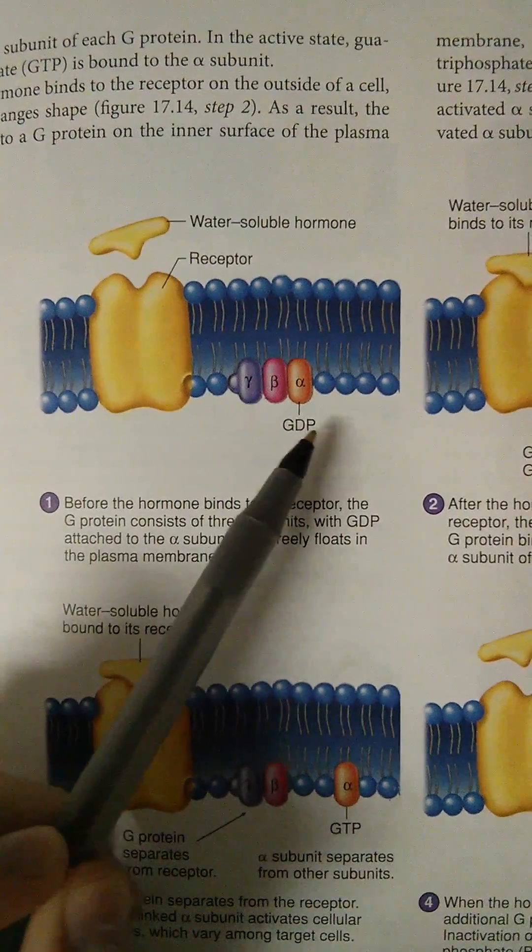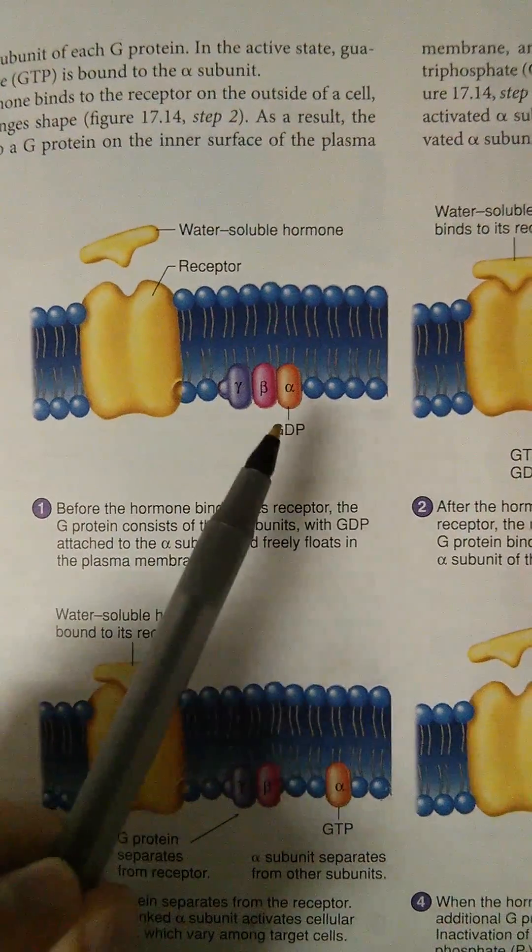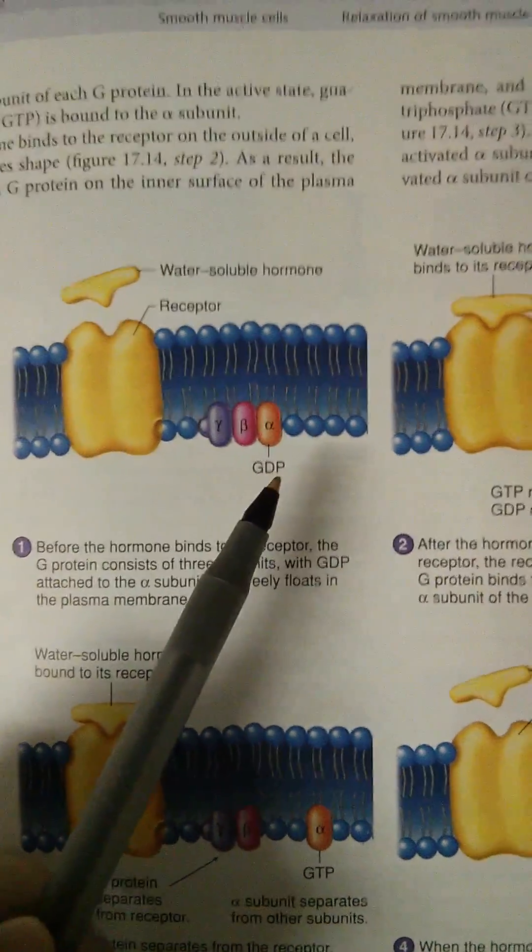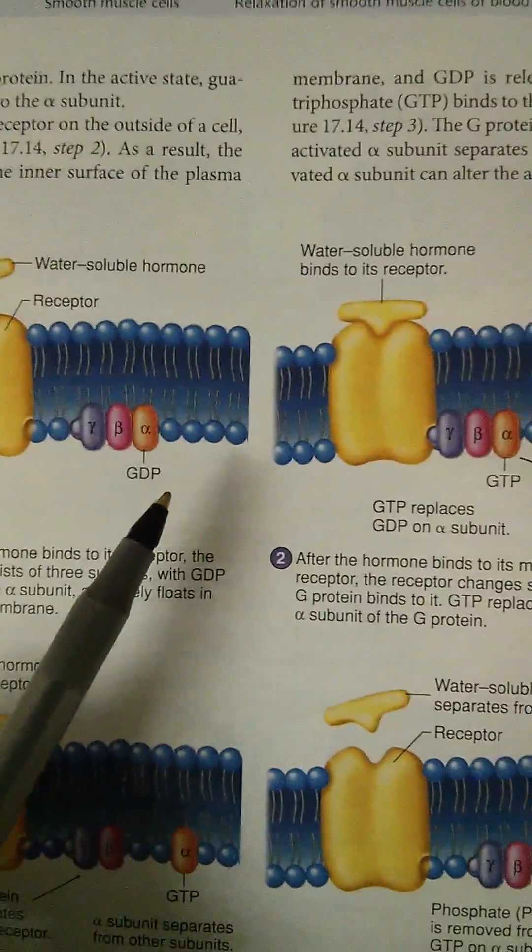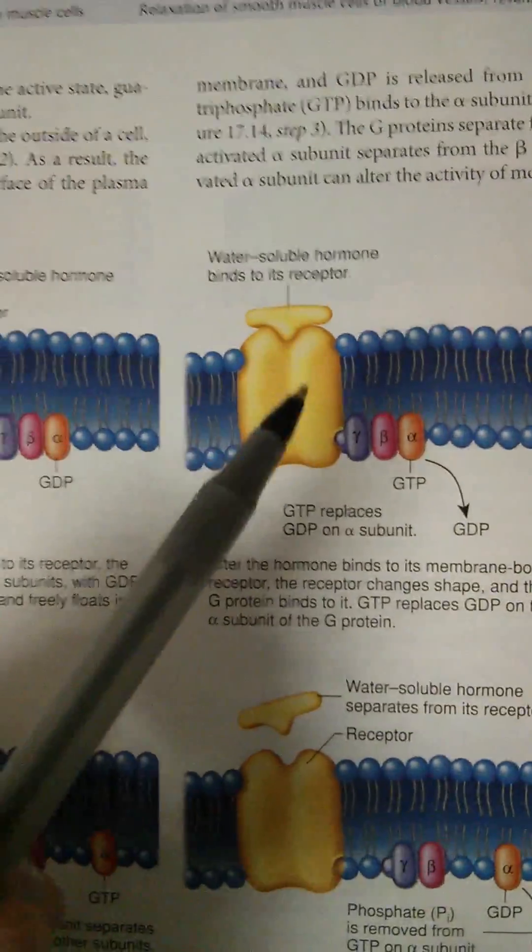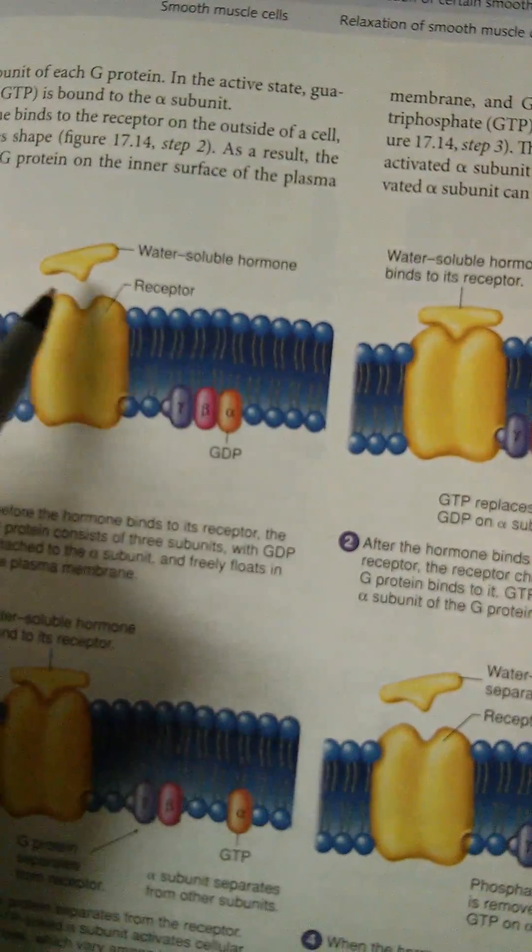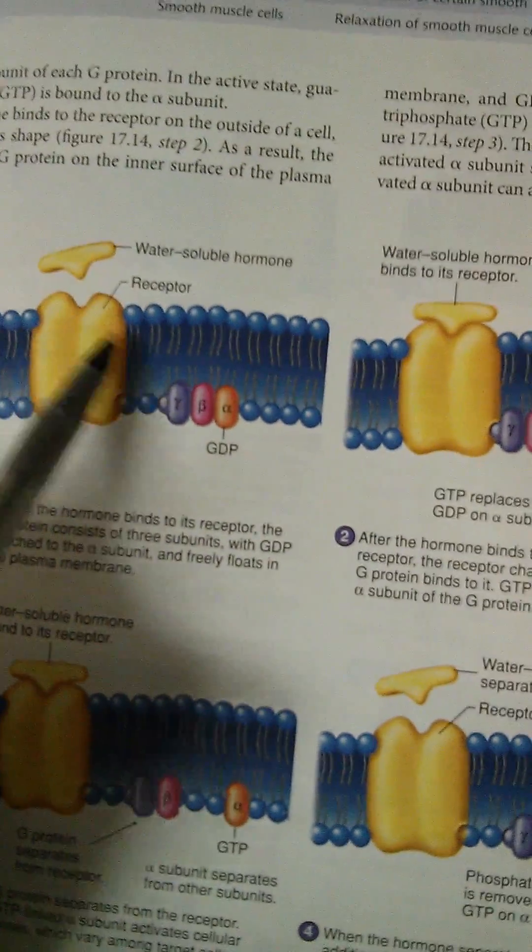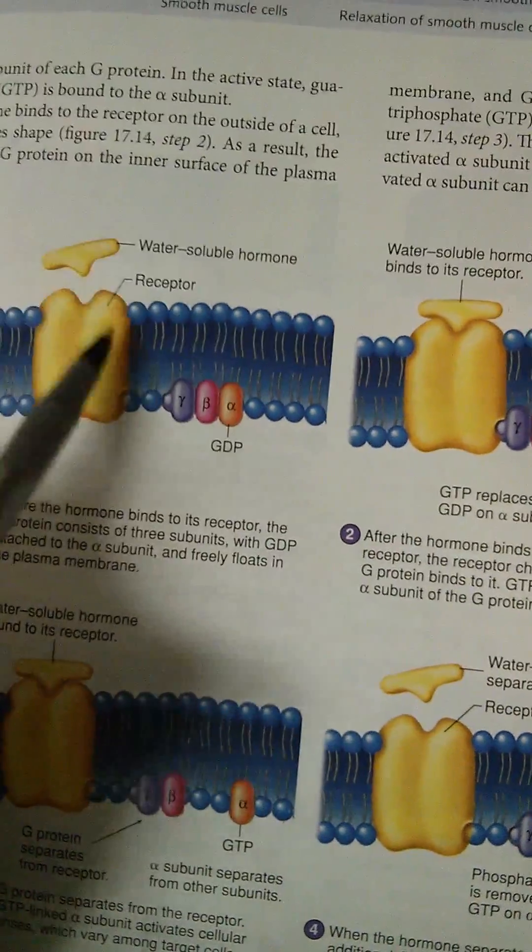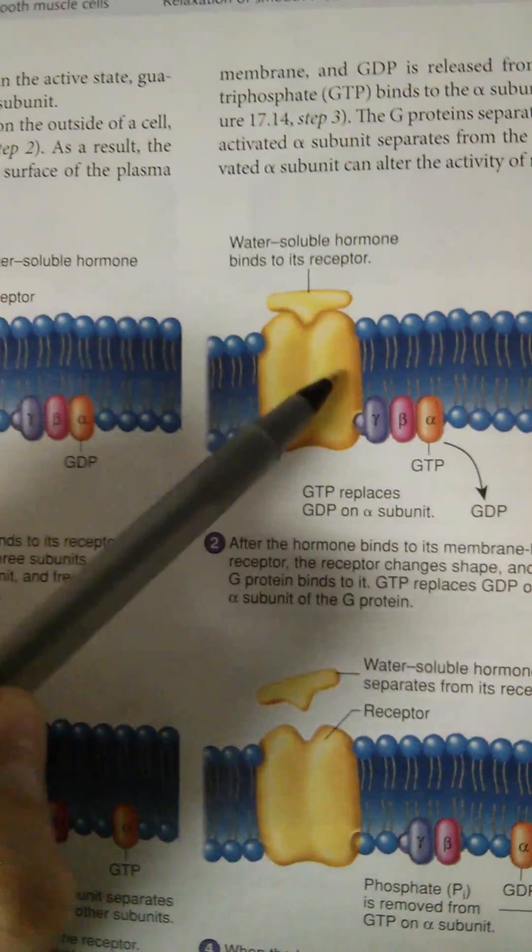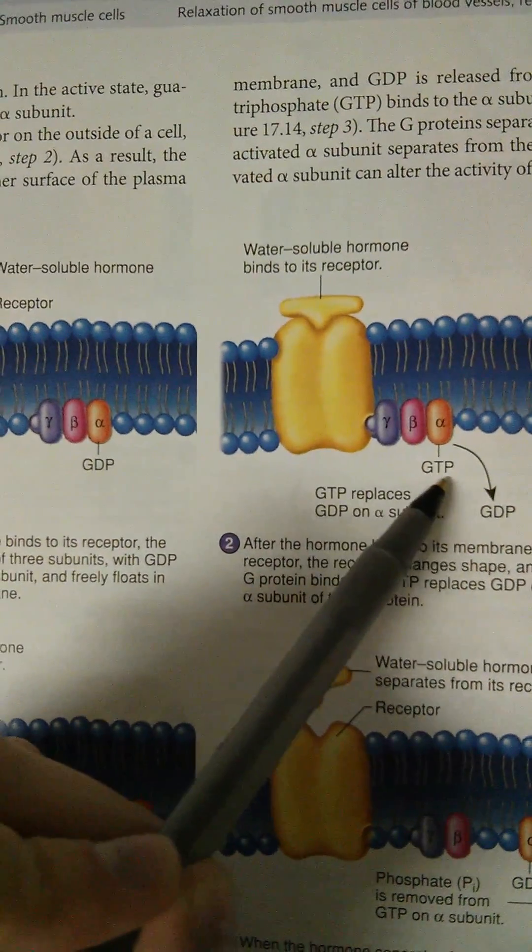it has something here called GDP. Don't worry too much about that. It's not super important. But what's important to know is that when it's actually activated, well, this is before it's, I'm sorry, this is before it's activated because it was before it actually bound to it. So it has GDP before it's bound. After it binds, it has GTP.